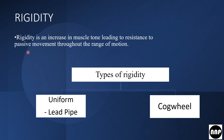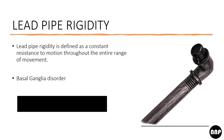The types of rigidity are uniform, that is lead pipe type of rigidity, and cogwheel type of rigidity. Lead pipe rigidity is defined as a constant resistance to motion throughout the entire range of movement.